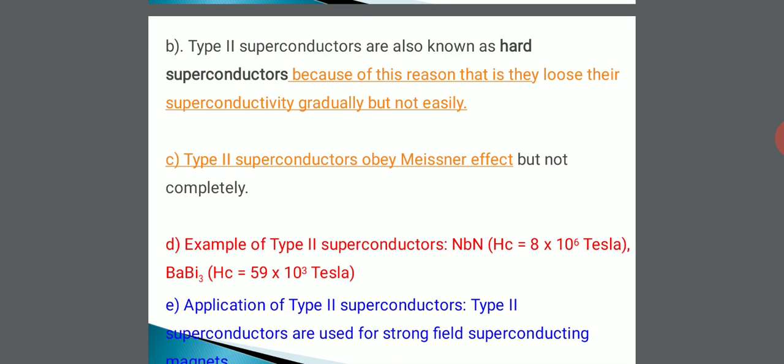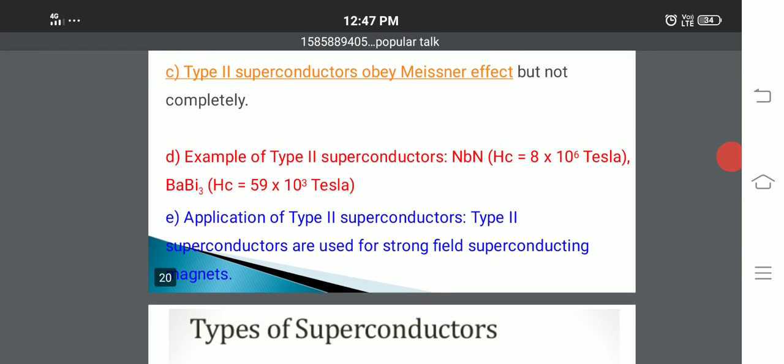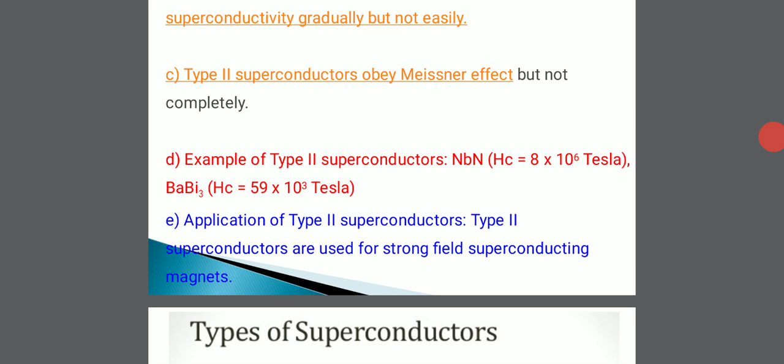Type 2 superconductors are also known as hard superconductors because they lose their superconductivity gradually and not easily — they require a very high magnetic field to destroy the superconducting phenomena. These type 2 superconductors obey the Meissner effect, but not completely like type 1 superconductors. Examples include niobium nitride with a critical magnetic field of 8×10⁶ tesla and BaBi₃ with a critical magnetic field of 53×10³ tesla.